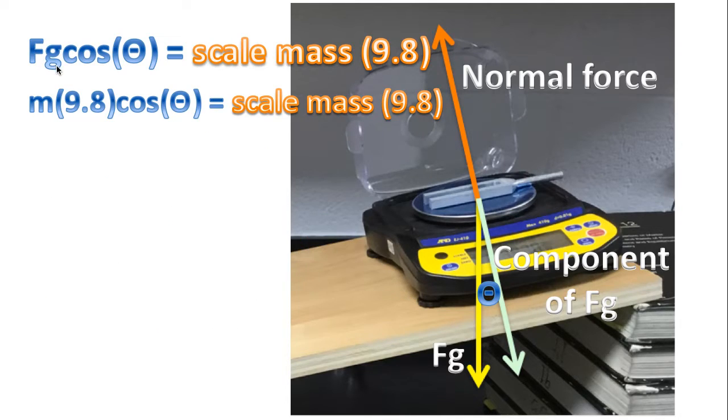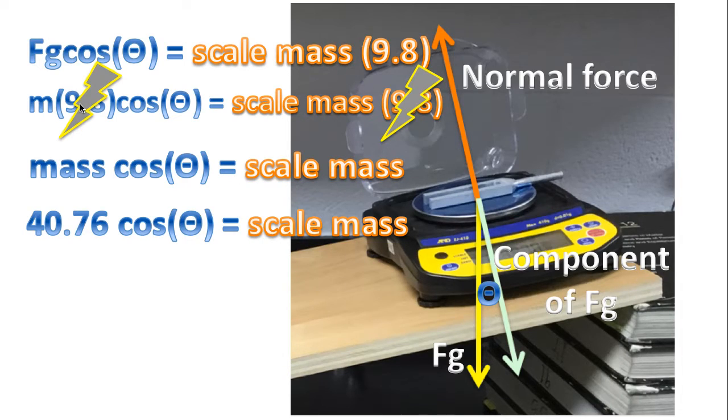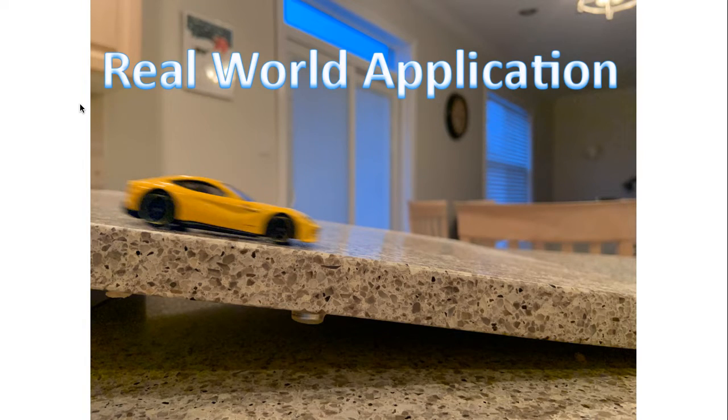And now, we'll substitute. The force of gravity, or the weight, is mass times 9.8. Notice, the 9.8s cancel. And we're left with mass times cosine of the angle, that's measured with the protractor, equals the scale mass. Or, we're left with the equation I gave to you at the beginning of the video. The mass was 40.76, times cosine of the angle, equals the scale mass. So, you notice throughout this investigation, that the mass, as registered by a scale, decreased as the angle of inclination increased.